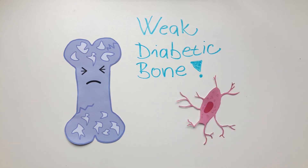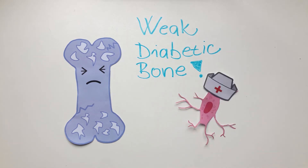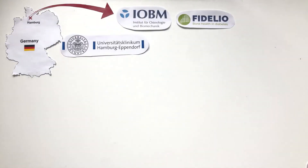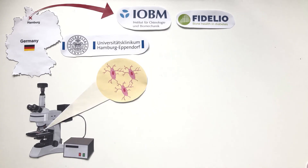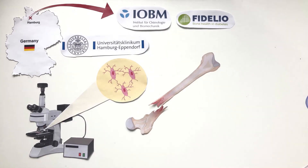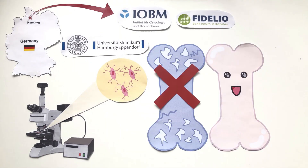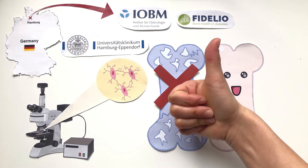This means that osteocytes are very important in diabetic bone disease. My laboratory is in Hamburg, Germany, where I am studying cellular changes in osteocytes and how these changes affect bone quality and fracture resistance. The overall goal is to uncover the underlying mechanism of diabetic bone disease and help improve the diagnosis and prevention of fractures in diabetic patients.